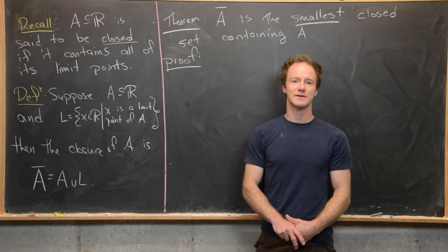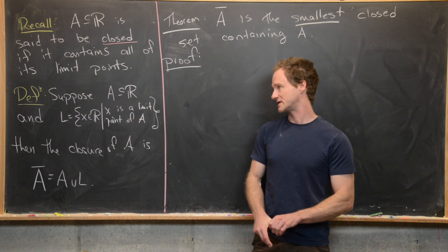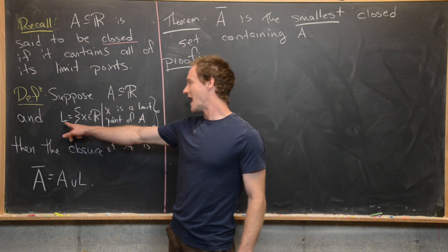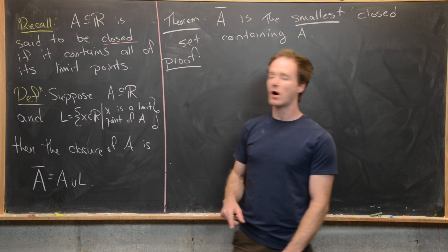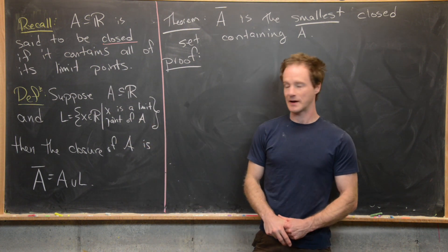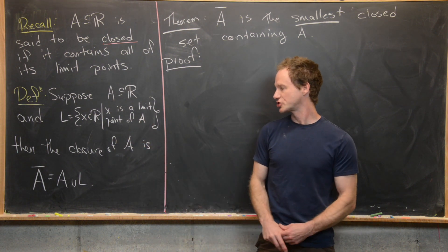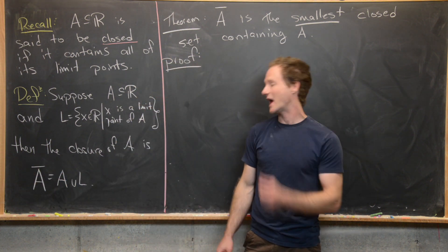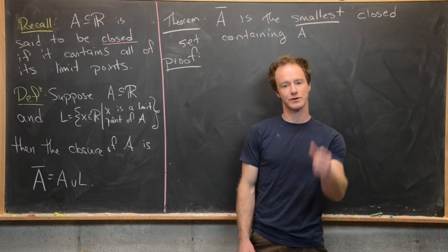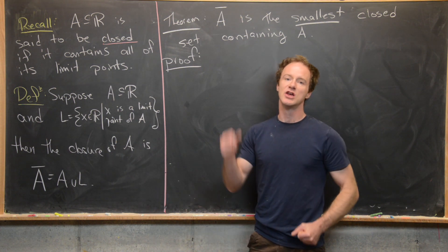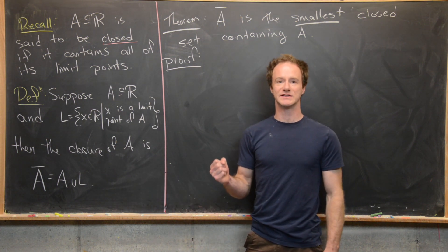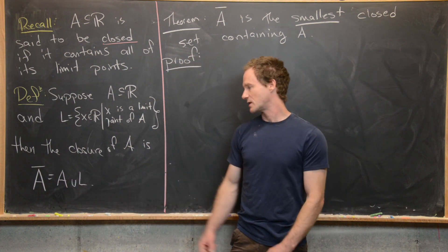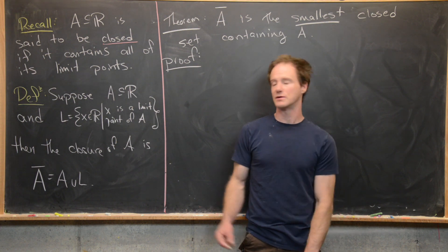Now I want to define something known as the closure of a set. Suppose A is a subset of real numbers and L is the set of all limit points of A. Then the closure of A, which we'll call A-bar, is defined to be A union L. Some of the limit points might already be in A, so there might be some overlap, but there also might not.